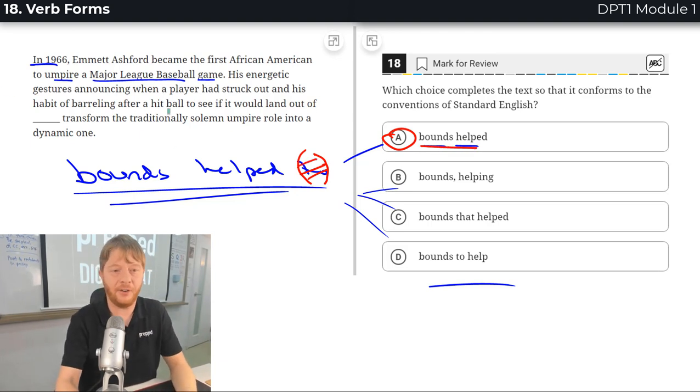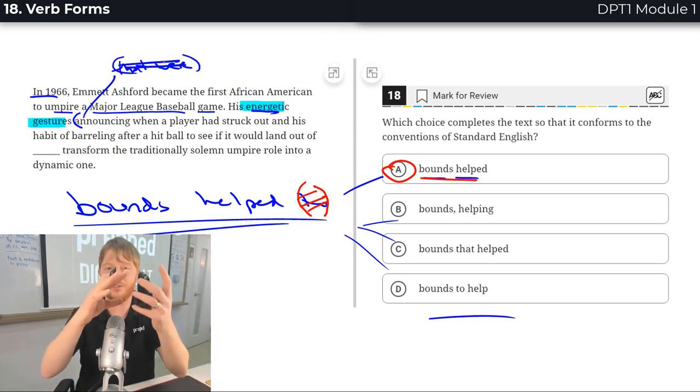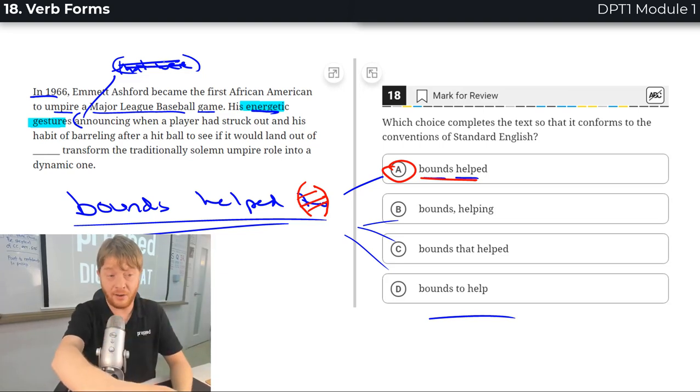Let's clarify the grammar here. The subject. His energetic gestures. That's one subject. Announcing means pretty much that we're announcing, although that we're has been omitted here. It's been reduced. We'll talk about that in another lesson.